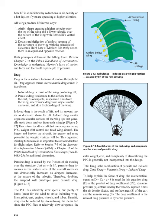Induced drag is the result of lift. Induced drag creates organized circular vortices off the wing tips that generally track down and out from each wing tip. This is true for all aircraft that use wings, including PPC, weight-shift control, and fixed-wing aircraft. The bigger and heavier the aircraft, the greater and more powerful the wing tip vortices will be. This organized swirling turbulence is an important factor to understand for flight safety. Refer to Section 7-3 of the Aeronautical Information Manual (AIM) or Chapter 12 of the Pilot's Handbook of Aeronautical Knowledge, FAA-H-8083-25, for additional discussion.